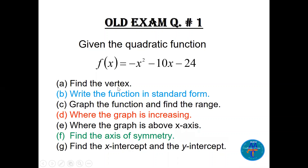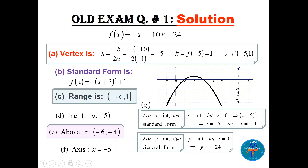You can use the formula or completing the square, then write the function in standard form. So h = -b/2a. This is already arranged, so h = -5. We need k, which is f(-5), so replace -5 in the function: (-5)² - (-5) gives 1, wait — evaluating gives k = 1. So the vertex is (-5, 1).